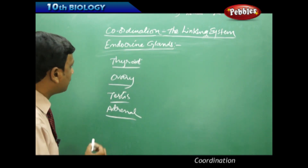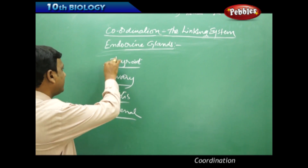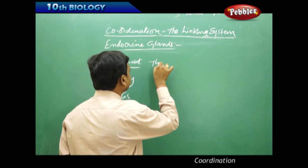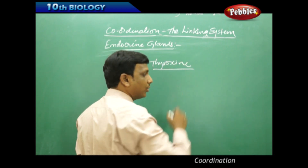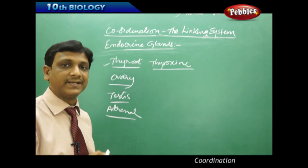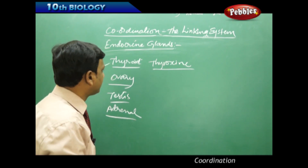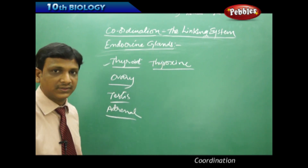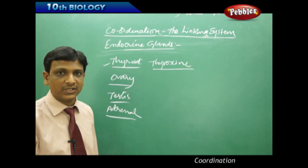Now let us look at other endocrine glands. The thyroid gland produces thyroxine, which controls the metabolism of our body. Body temperature and metabolic activity rate are controlled by thyroxine. Different types of hormones are produced by the thyroid — T3 and T4.